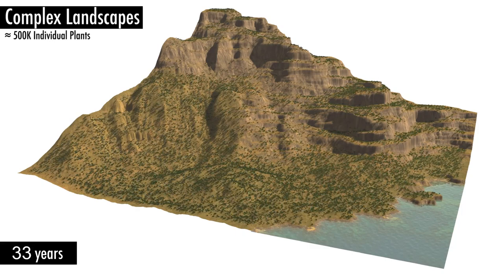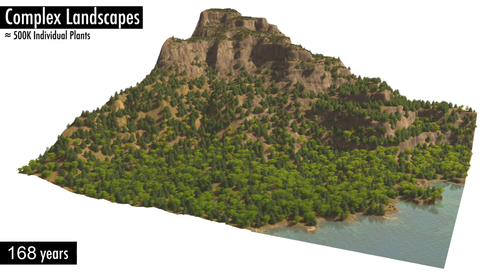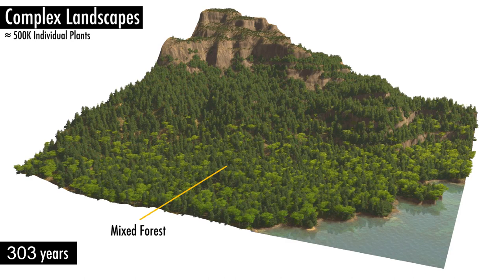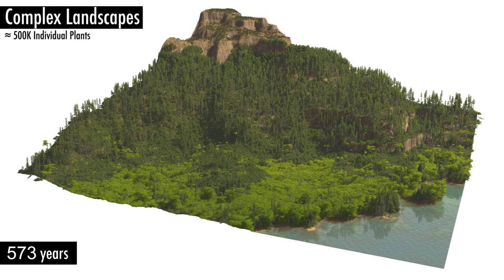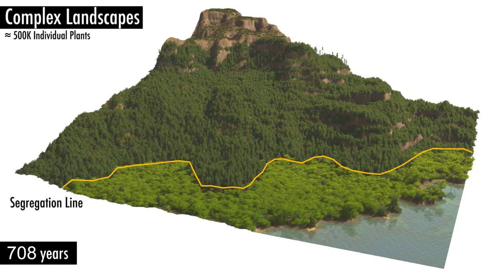As a final scene, we simulate the temporal evolution of a complex plant ecosystem in an initially empty mountainous region over a couple of hundred years. The elevation varies by about 250 meters. We consider three different plant types: shrubs, conifers, and deciduous trees. Their seeds are assumed to be distributed almost uniformly within the region. Such a setup can, for example, occur after glaciers were largely melted at the end of an ice age.